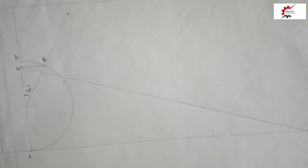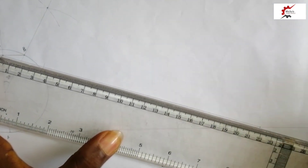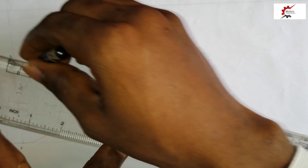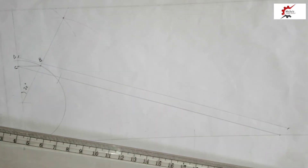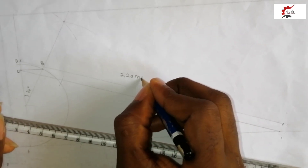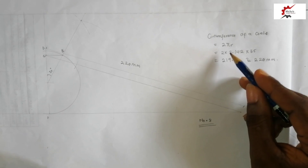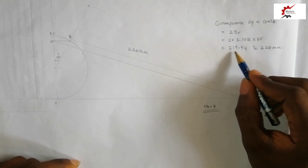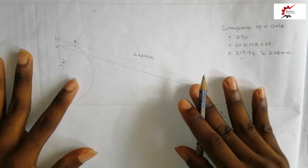Measuring these two points: the distance from here to here is 22 cm, which is 220mm. To test if we are correct mathematically, the circumference is π times diameter. When we calculate, we get approximately 219.94mm, which is approximately 220mm. Therefore our construction is correct.